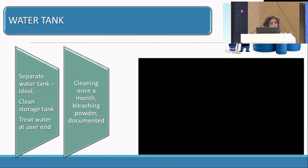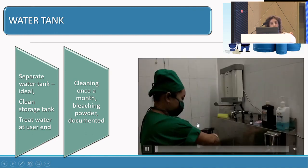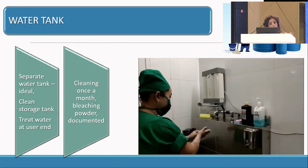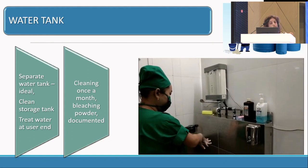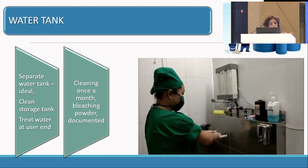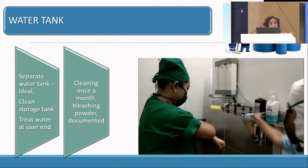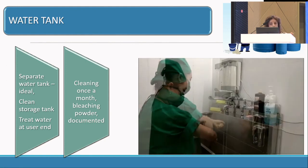Coming to the water tank, an OT should have a separate water tank — not the one shared with indoor or outdoor patients. Preferably a small one so that it can be cleaned monthly. The water also needs to be treated at the user end. Our standard protocol is first washing with soap, then with 7% povidone iodine cleansing solution, followed by cleansing with AquaGuard water treatment at the user end, and finally with an alcohol-based rub — terrylium.